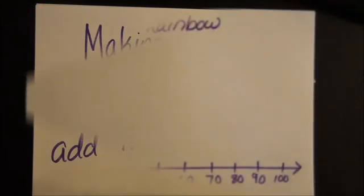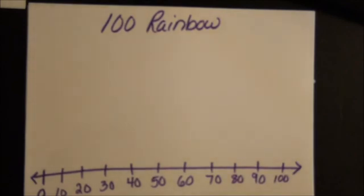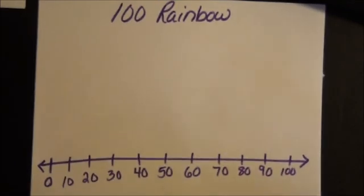You can still do 10s and I'll show you how that works. This is for making a 100 rainbow. The number line goes from 0 to 100, counting by 10s, and it works just the same way as the 10 rainbow did.